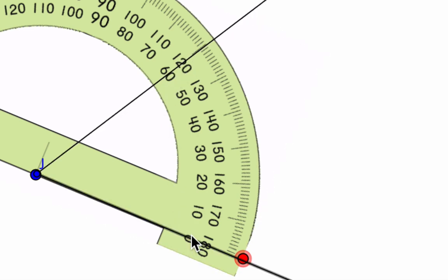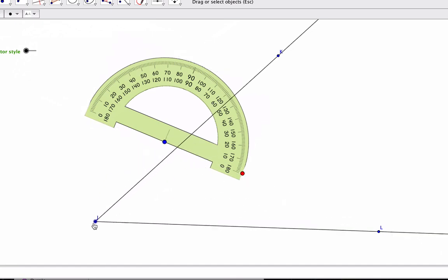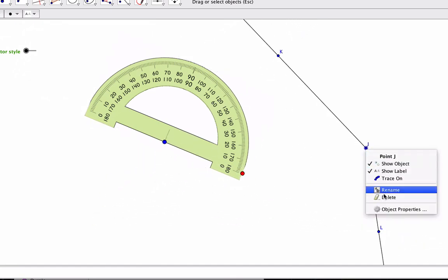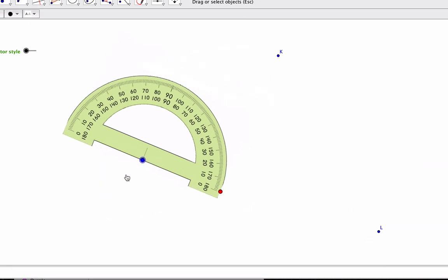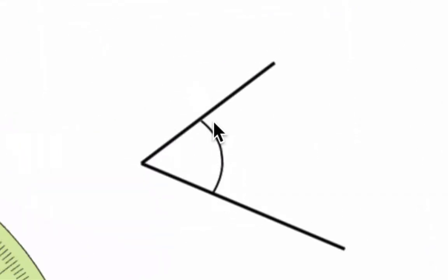But basically, if you think about it, we're going to start down here at zero. So then this is 10. This is 20, 30, 40, 50, 60. So that shows us that this angle, whoa, not that angle. I'll delete that. The angle that we were measuring, this angle here is about 60 degrees.